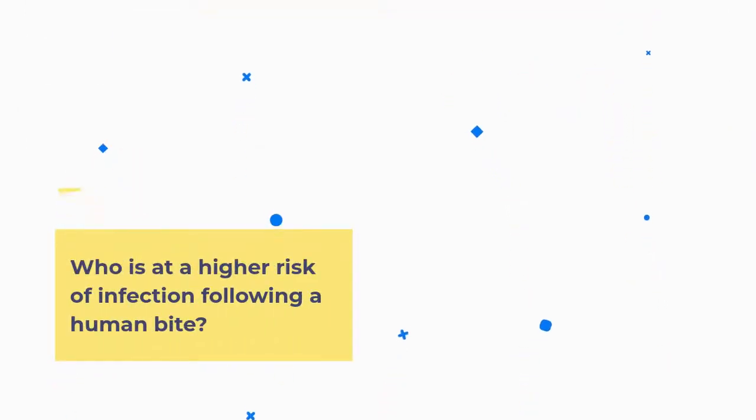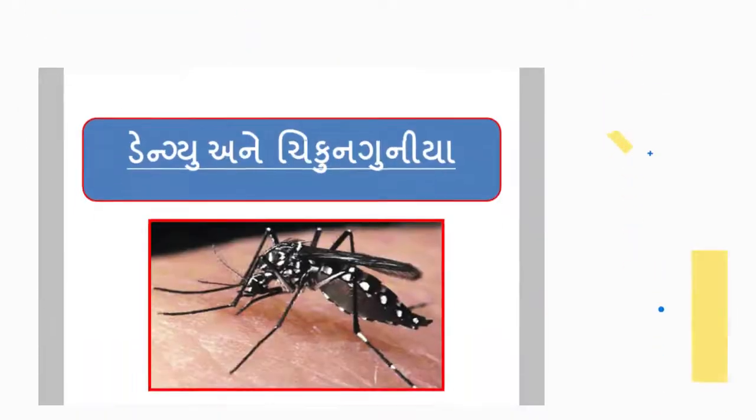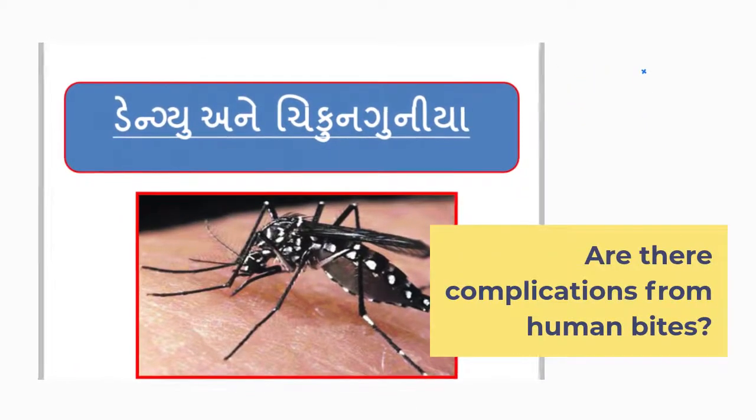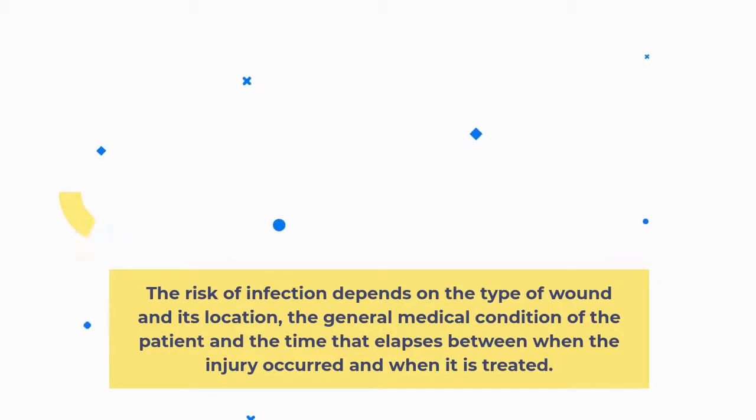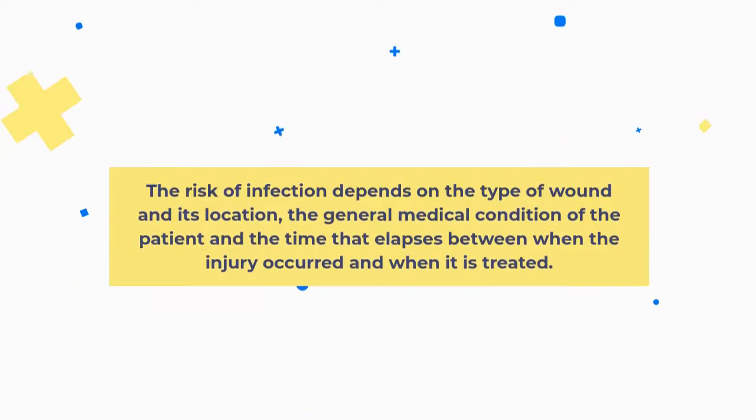Who is at a higher risk of infection following a human bite? Are there complications from human bites? The risk of infection depends on the type of wound and its location, the general medical condition of the patient and the time that elapses between when the injury occurred and when it is treated.